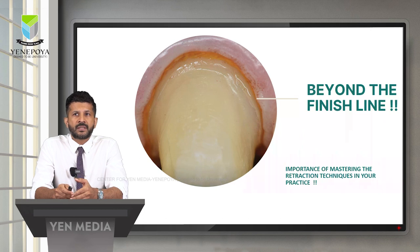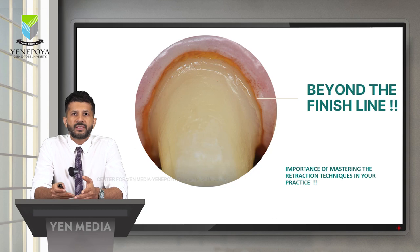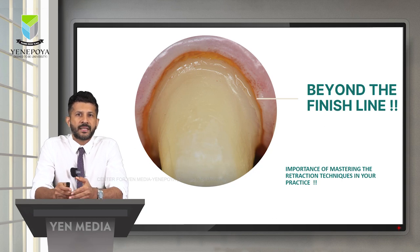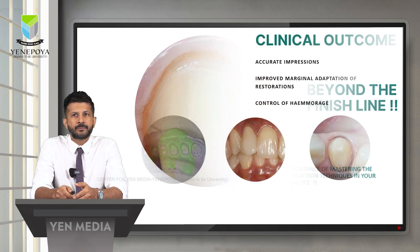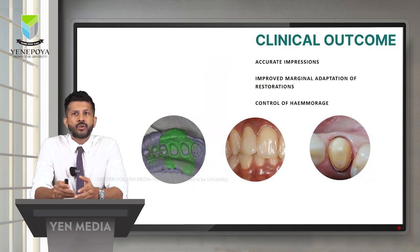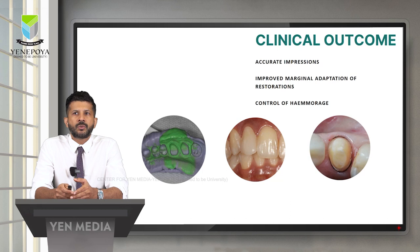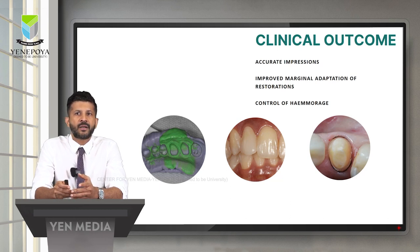Once the tooth preparation is done and the margins are prepared, our job doesn't end here — we need to think beyond the finish line. The importance of mastering retraction techniques allows us to achieve the following clinical outcomes: accurate impressions, improved marginal adaptations of the restorations, and control of hemorrhage. If we take a closer look at the impression, we can see how well the margins have been recorded, the improved marginal adaptation of the restoration post-cementation, and control of hemorrhage when we record an impression.